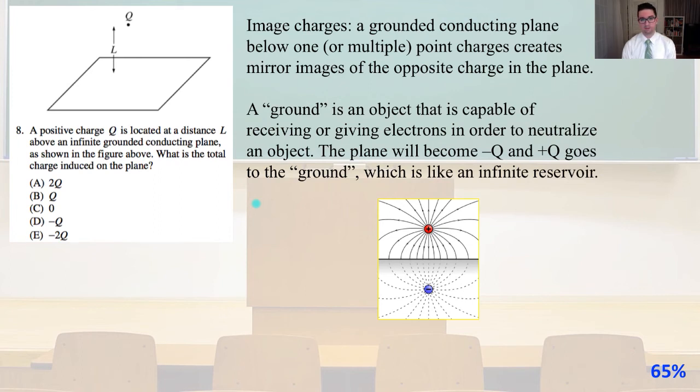We have a grounded conducting plane below one or multiple point charges, which creates mirror images of the opposite charge in the plane. A ground is an object capable of receiving or giving electrons to neutralize an object. The plane will become minus q, and the plus q goes to the ground, which is like an infinite reservoir. So number eight is answer D.